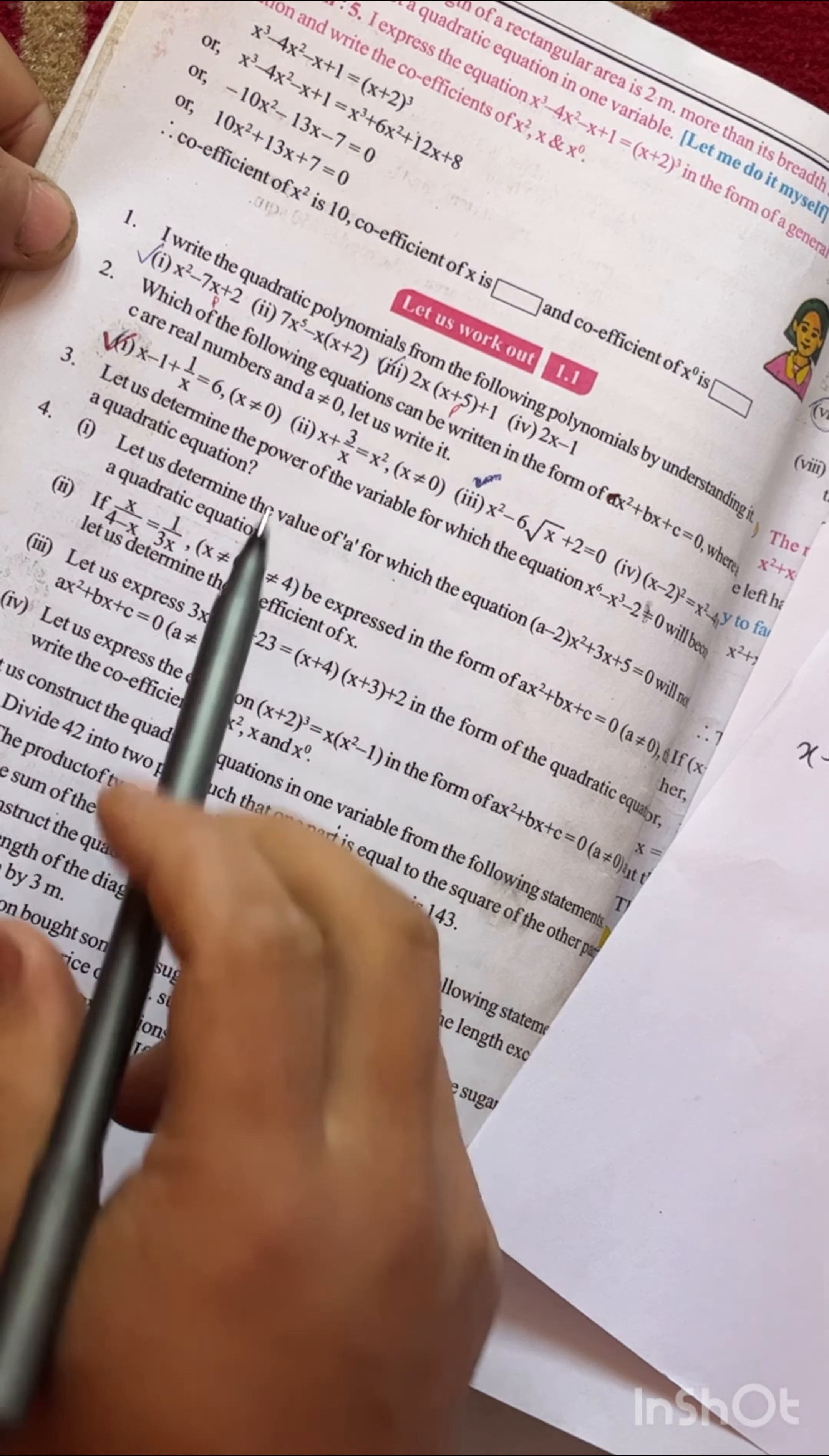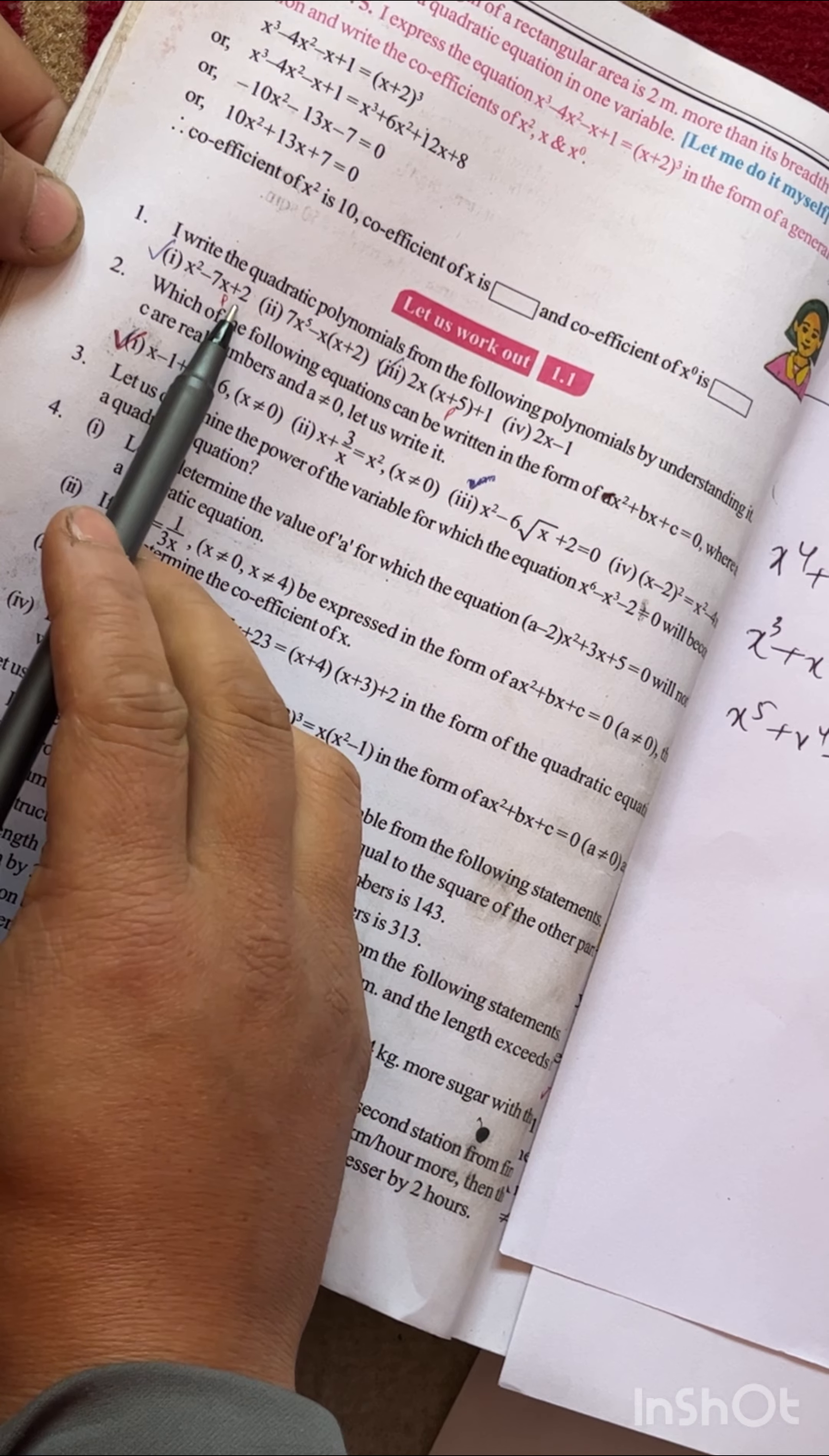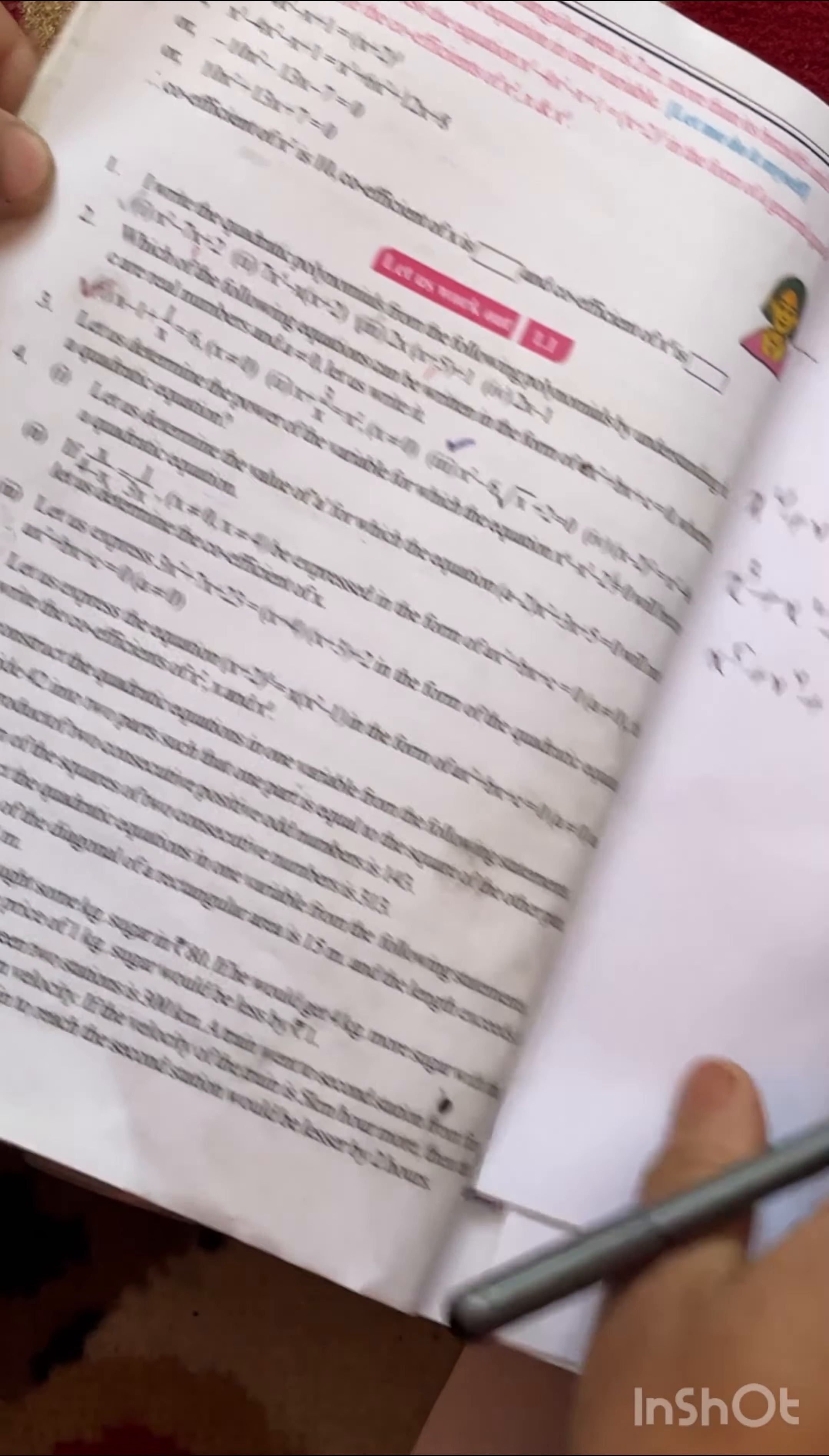Let's consider the first one: x² - 7x + 2. This is a quadratic polynomial because the highest power of x is 2. So we can say this is quadratic.